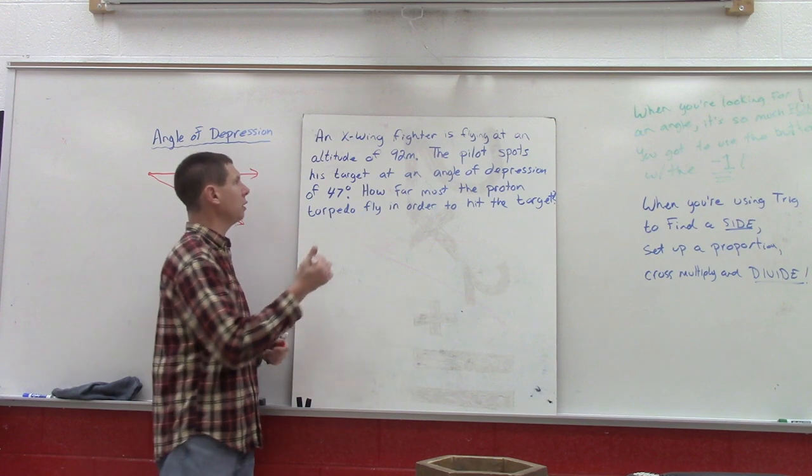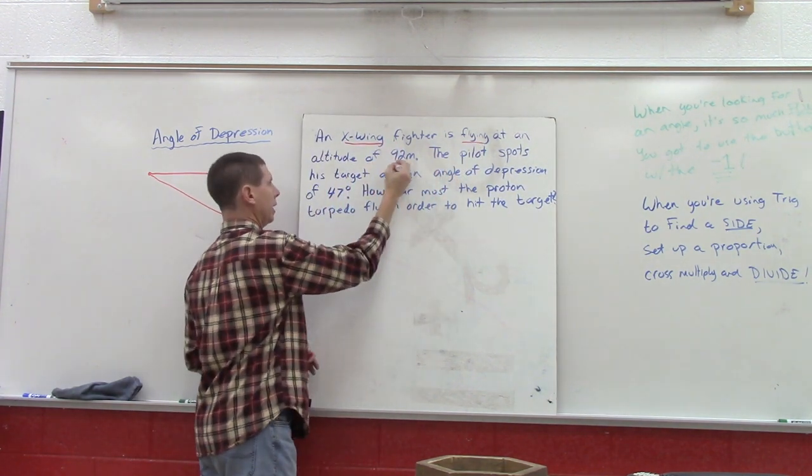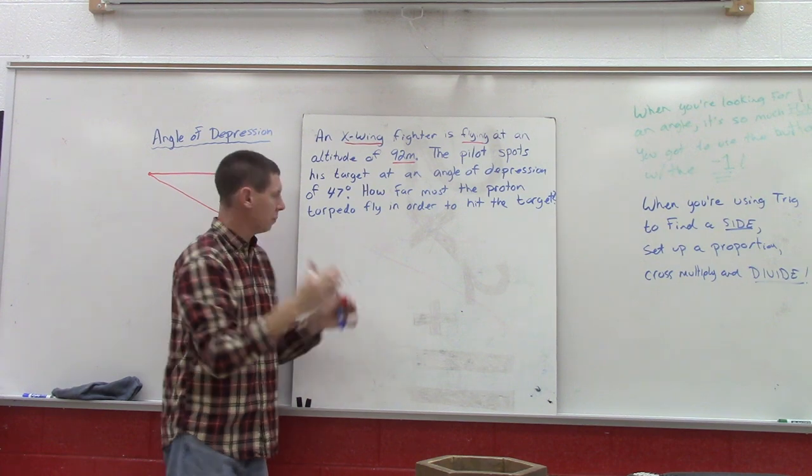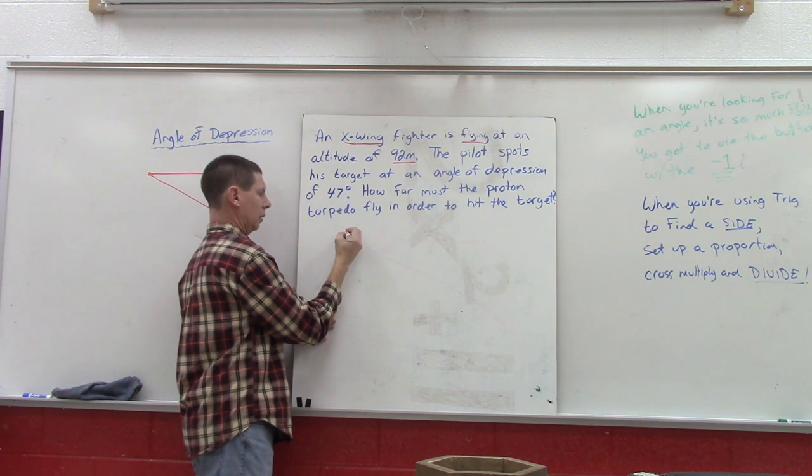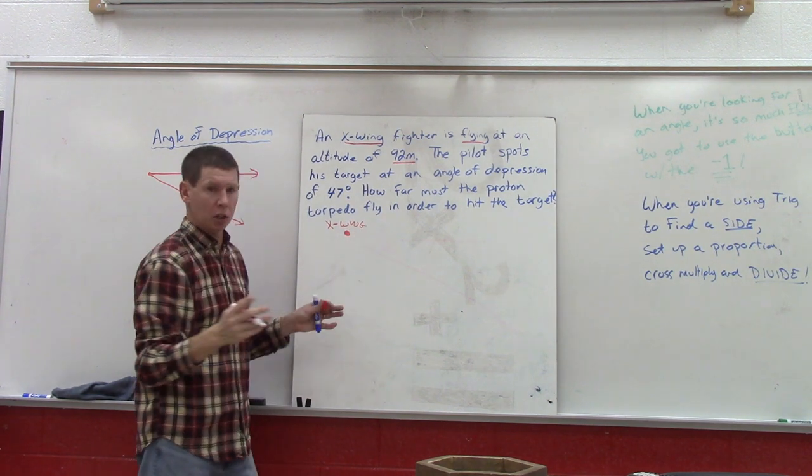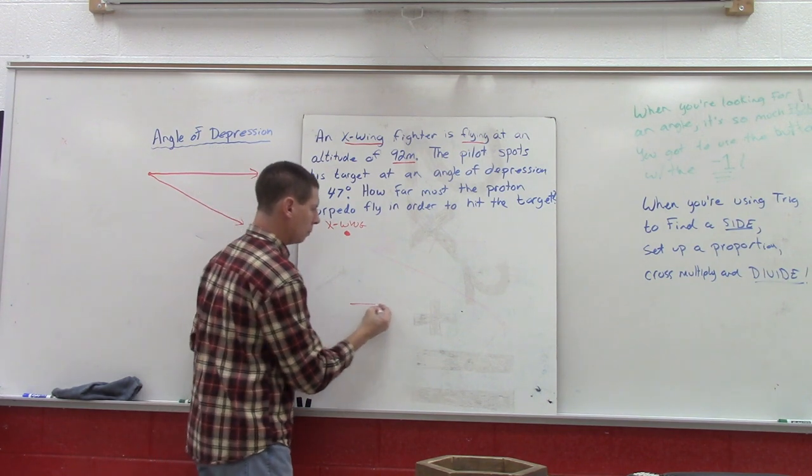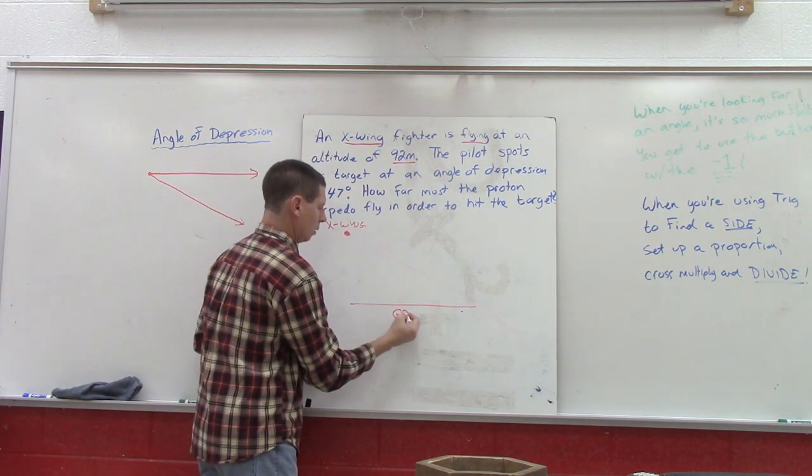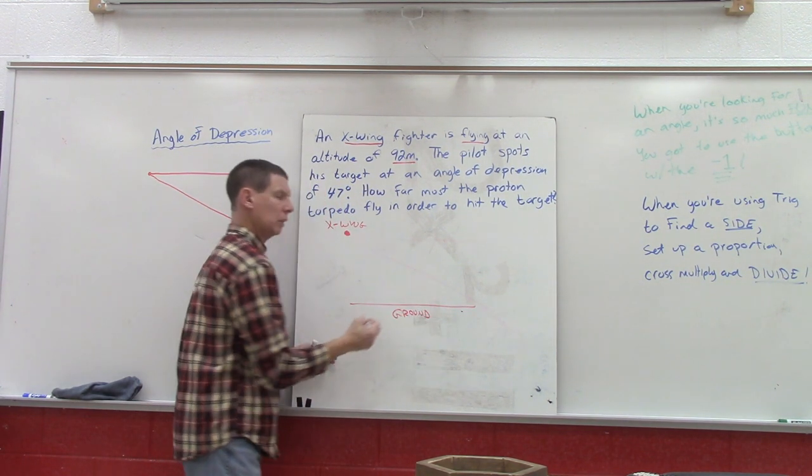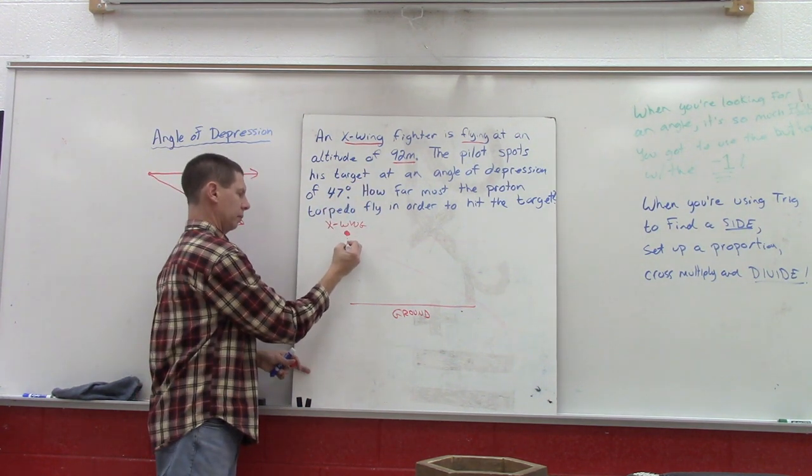Let's try to model this. The first thing we know is that we got ourselves an X-wing fighter flying at an altitude of 92 meters. So somewhere up top we got our X-wing. We also know somewhere down below is the ground, and this 92 represents the altitude—and altitude recall is height.